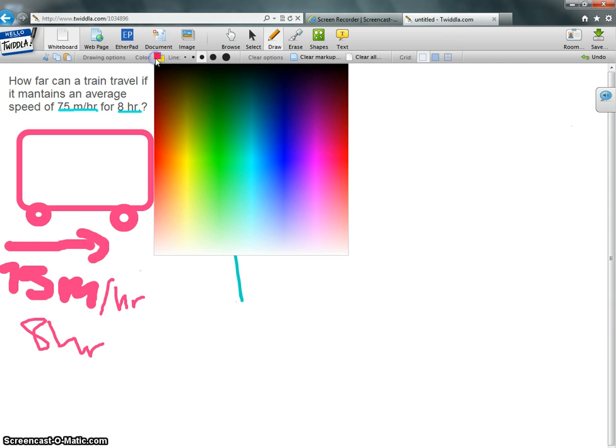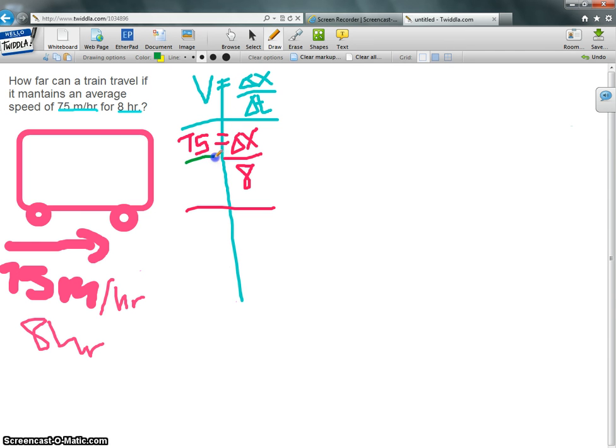What do we do now? Well, we make the 75 into a fraction, so we can be able to cross multiply. 75 times 8, if 5 times 8 is 40, and 7 times 8 is 56, plus 4 is 60.